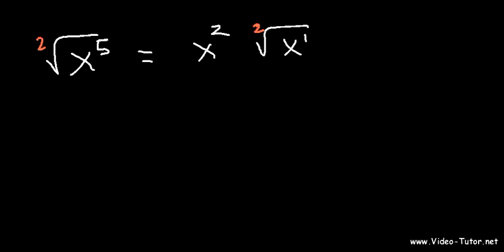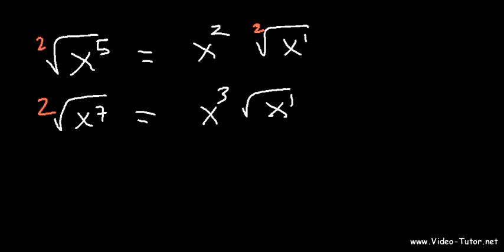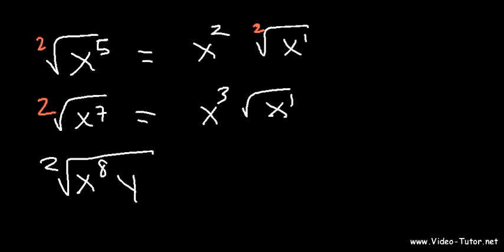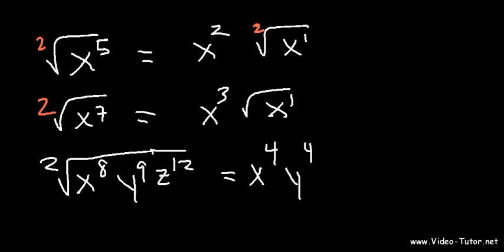For example, if you want to simplify the square root of x to the 7: how many times does 2 go into 7? 2 goes into 7 three times with 1 remaining. How many times does 2 go into 8? 8 divided by 2 is 4 — 2 goes into 8 four times with no remainder. 2 goes into 9 four times with a remainder of 1, so the y stays on the inside. 2 goes into 12 six times with no remainder.